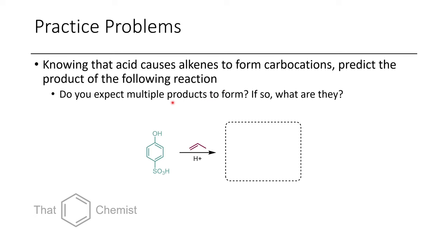In this final problem, I asked you to predict which products would form from the following reaction and whether multiple products would form. This is an alkene that can get protonated by a strong acid to form a secondary carbocation, which could add in the ortho positions, as this is a good ortho-para director. Since the para position is blocked, you can't add para. Additionally, because this is an electron-withdrawing group, it directs addition to the meta position relative to the sulfonyl group, so this should direct to the ortho position.